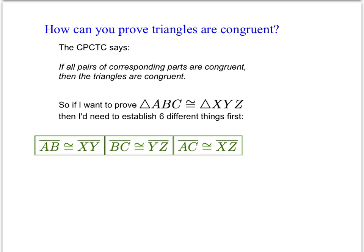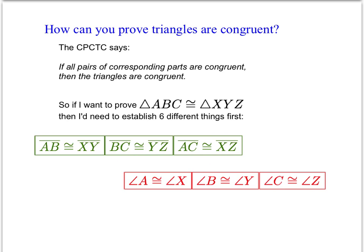We can use CPCTC to prove that triangles are congruent. All we would have to do is show that all pairs of corresponding parts are congruent, and then we could say the triangles are congruent. The problem with that is we'd have to establish six different things: not only would we need to prove that all three pairs of sides are congruent, but we'd also have to prove that all three pairs of angles are congruent as well, which is tedious.